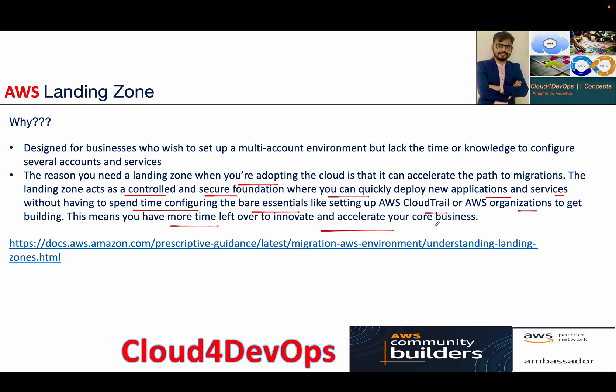However, when you already have 500, 600, or 100–300 accounts where each account is working on its own separate service control policies and not in sync, moving towards Landing Zone or Control Tower is possible but requires a lot of effort. This is based on my experience — understand your existing environment carefully. If you're starting from scratch, I always recommend Control Tower.